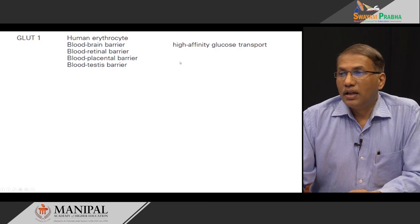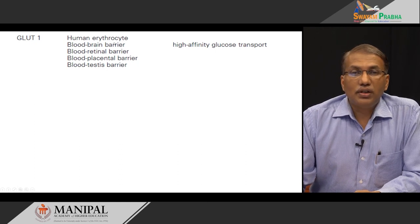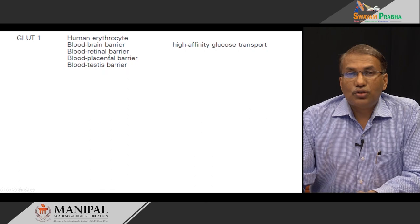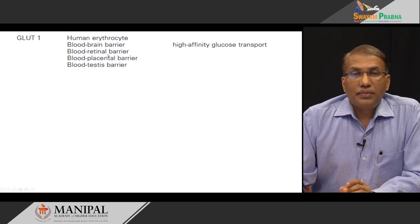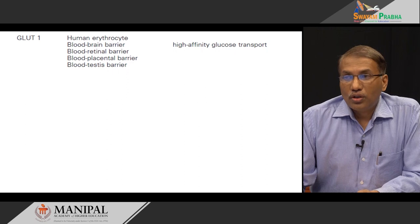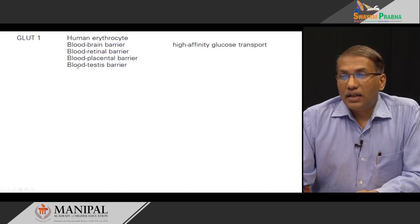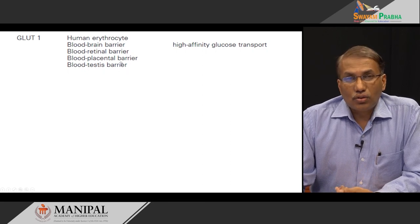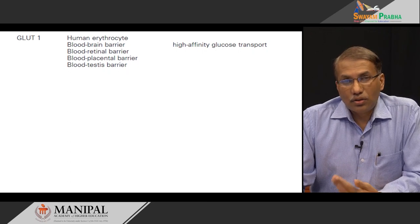GLUT1 has very high affinity for glucose and is specifically located in erythrocytes, because glucose is the only source of energy for RBCs. It is also present at the blood-brain barrier, blood-retinal barrier, and in the retina and vitreous humor — which are avascular in nature and predominantly make energy by anaerobic mechanisms, for which glucose is the only nutrient that can provide energy anaerobically. It is also vital for the testis and the placental barrier, where it transports glucose from maternal blood into the baby's blood.